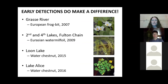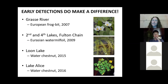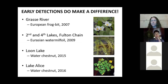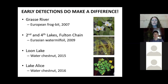Some examples of early detection success: in 2007, European frogbit was found near Lampson Falls in the Grass River and has been managed by APIP ever since. We started removing 35 five-gallon buckets of frogbit — now we collect maybe a half bucket or less per year. Also, in 2009, two small patches of Eurasian water milfoil under an acre were found in the Second and Fourth Lakes of the Fulton Chain. Paul Smith's College Adirondack Watershed Institute hand-harvested those, and follow-up surveys have not found any since.